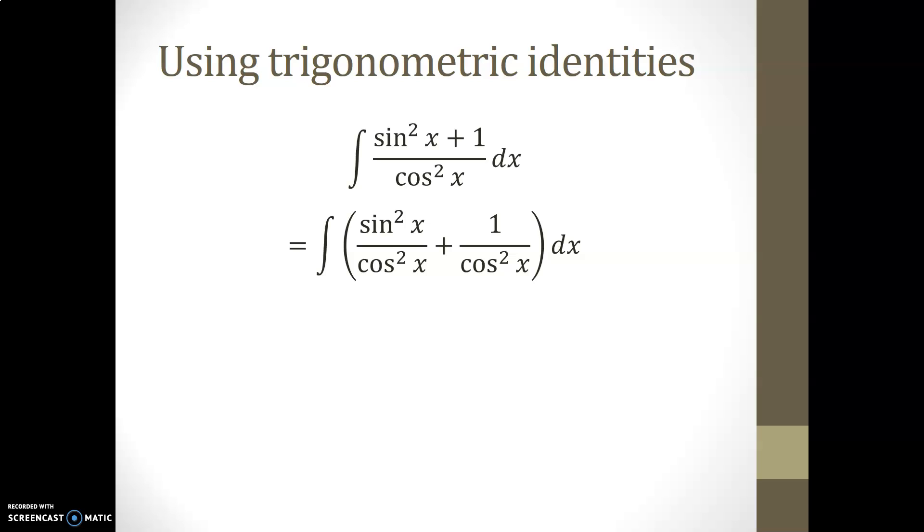So here we've divided cos square x to both, or we've applied the division of cos square x to both terms at the numerator. The first fraction, sin square x over cos square x, is actually tan square x. The second fraction, 1 over cos square x, is actually equivalent to secant square x. And like we saw in the previous slide, tan square x is the same as secant square x minus 1.